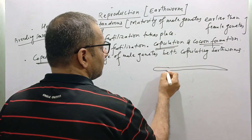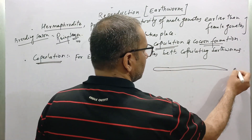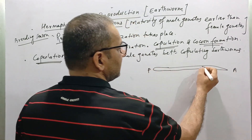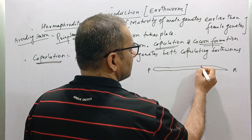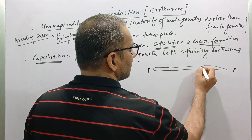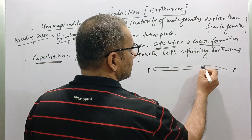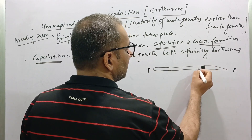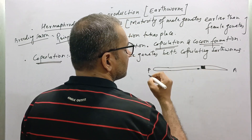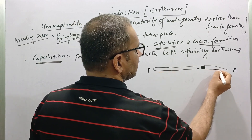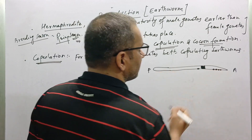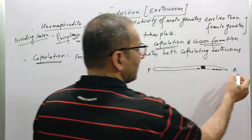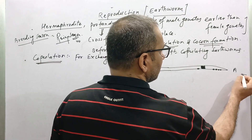This is one earthworm — this is the anterior end, this is the posterior end, here is the clitellar region, this is the clitellum, here is the male genital pore, and here are the spermathecal pores.